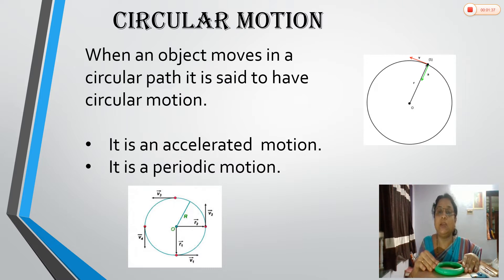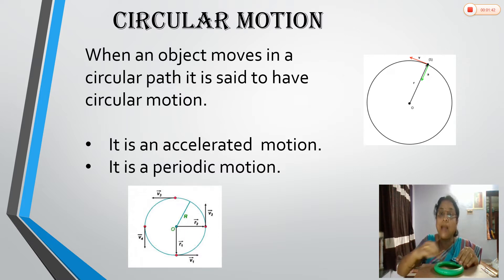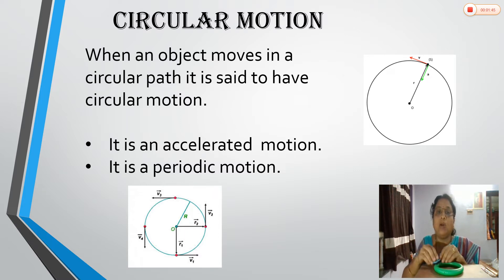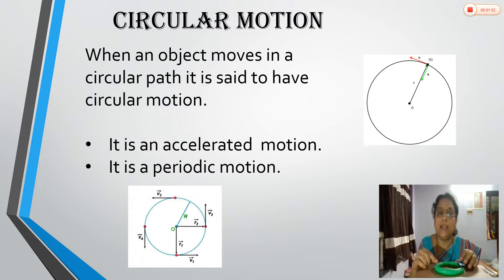Similarly, in circular motion, the special thing is that the object is revolving along a circular path. When the object moves along a circular path, it is said to have circular motion. There are two special characteristics of circular motion: first, it is an accelerated motion.